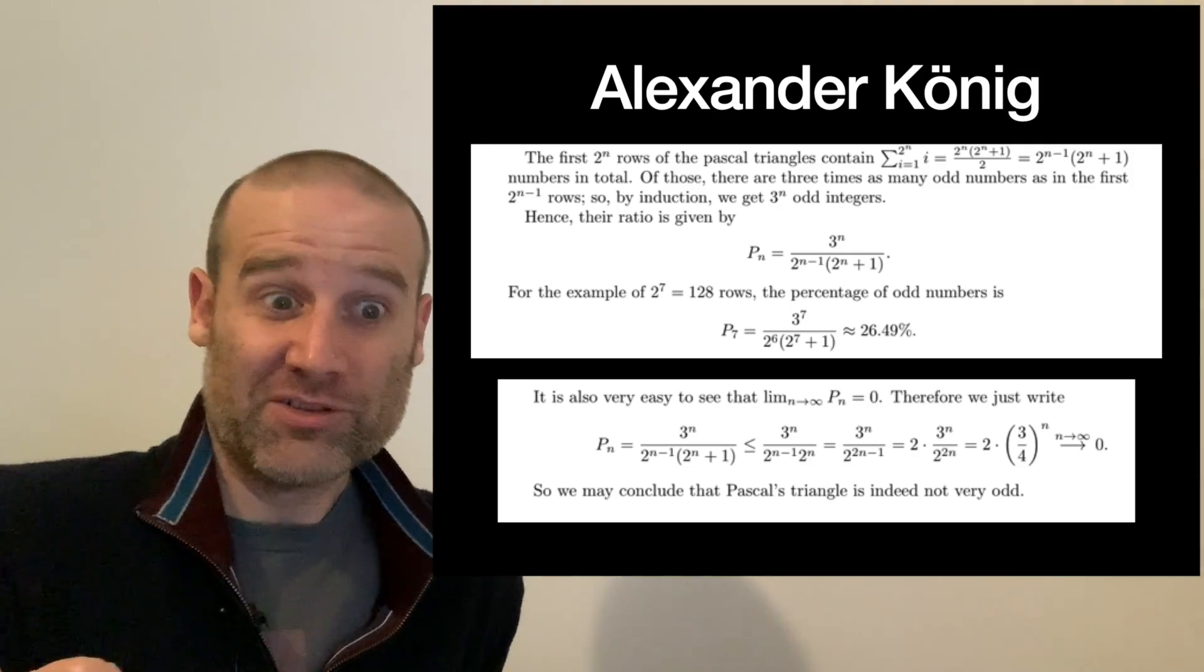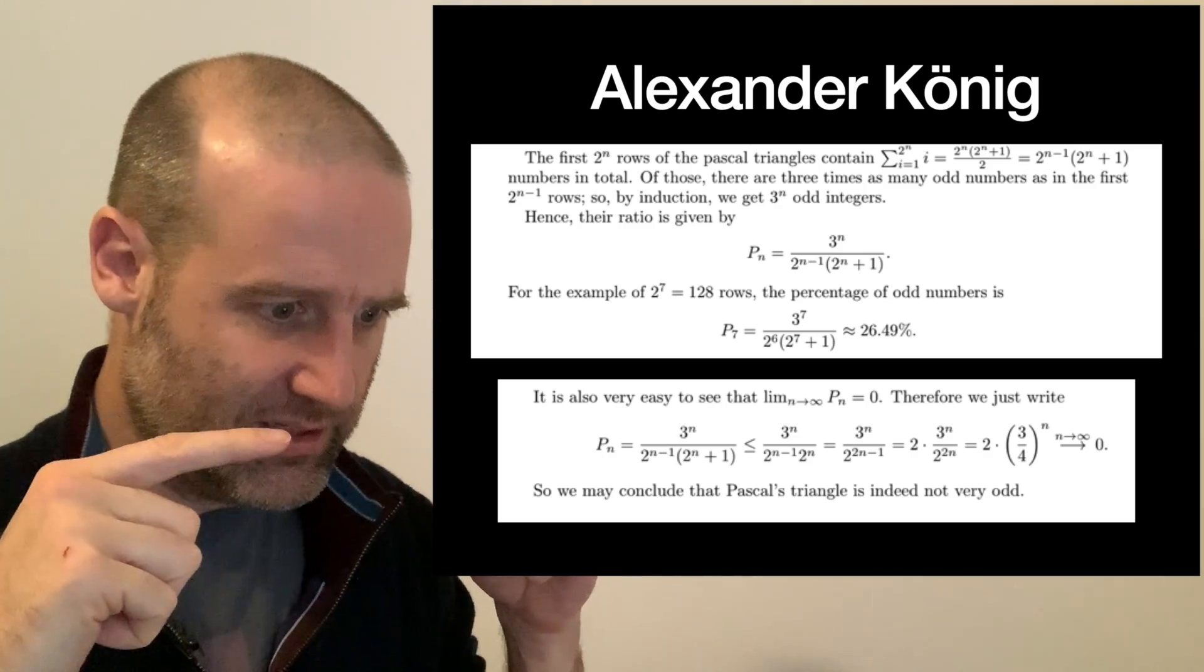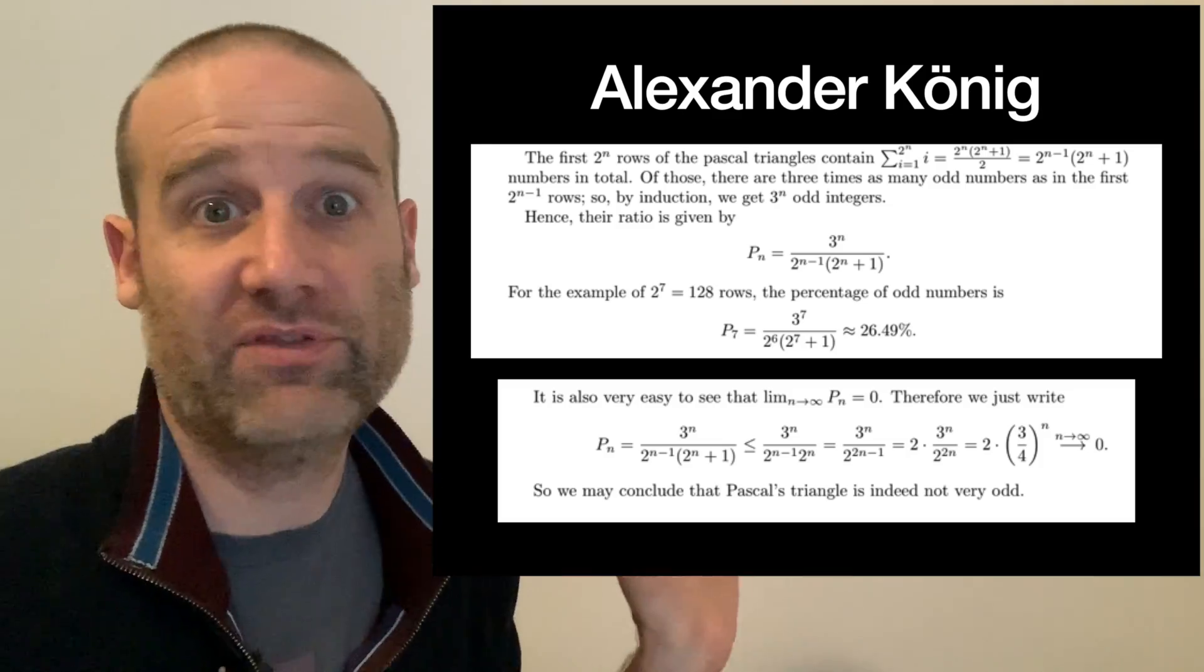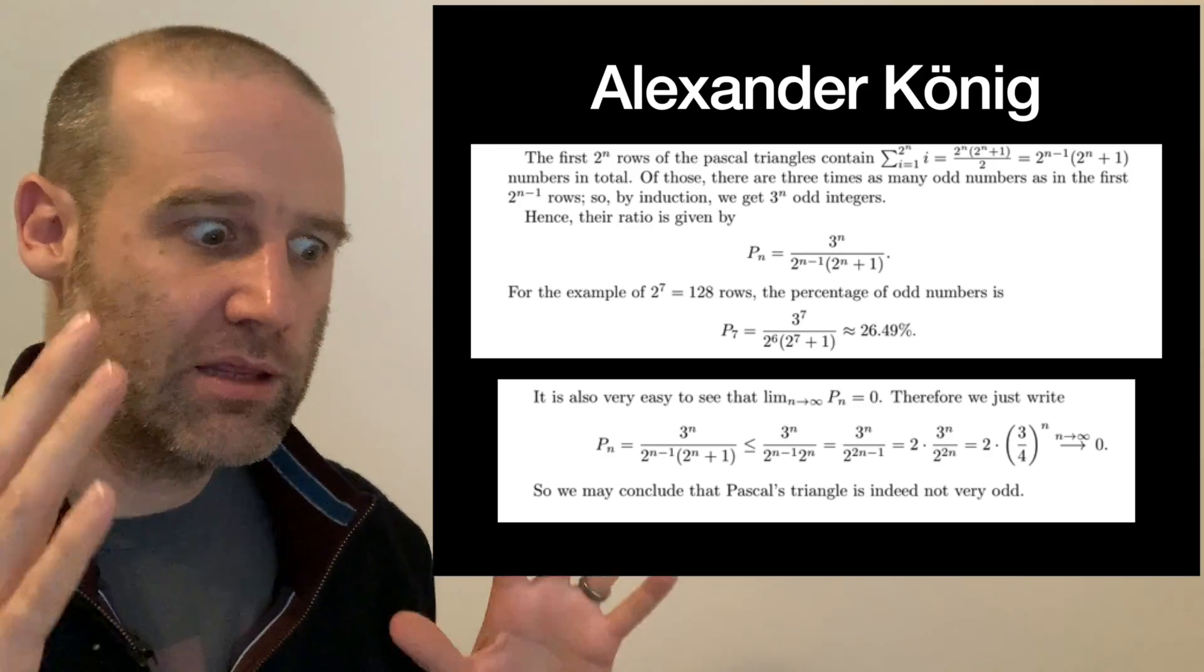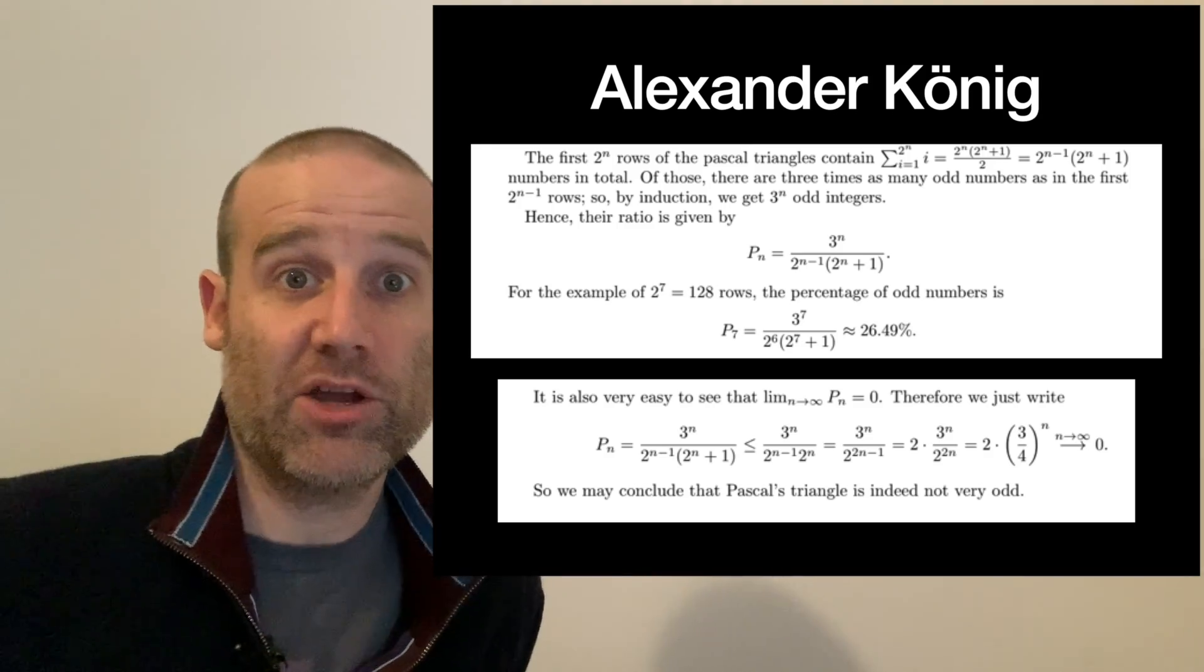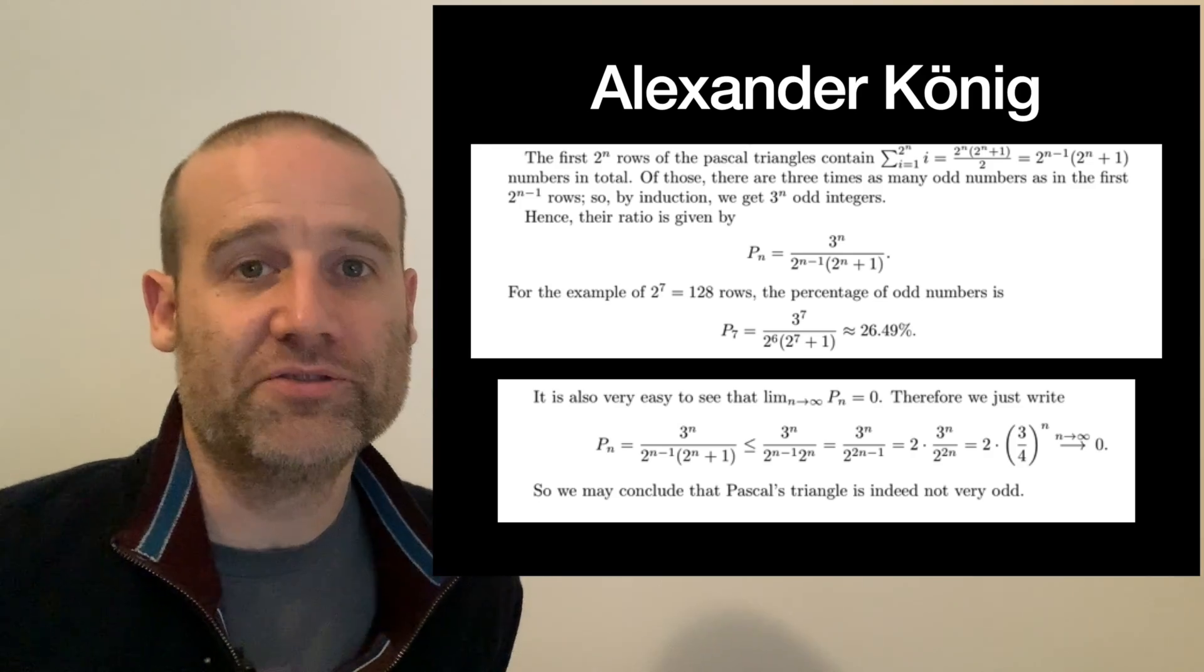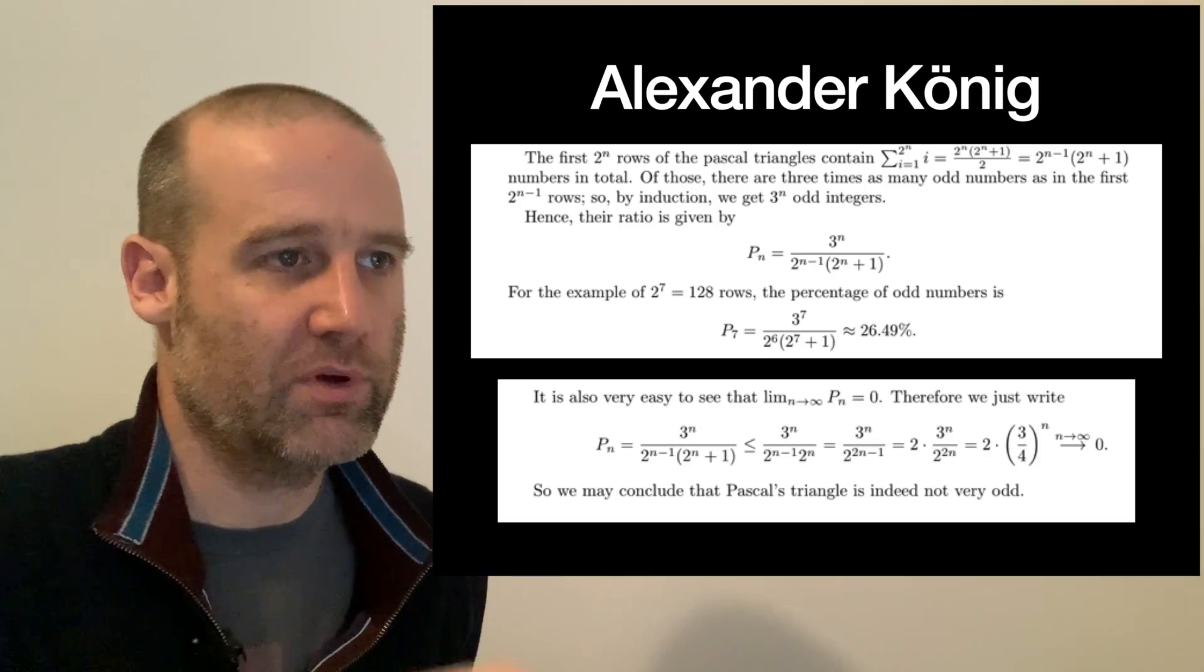Alexander did it in general. You can see the 26.49 that they got correct. They also then did it as the number of rows approaches infinity. So there are infinitely many rows in Pascal's triangle, and as you approach that, the percentage that are odd approaches zero. So in the infinitely many rows of Pascal's triangle, the percentage is zero, but it approaches zero.